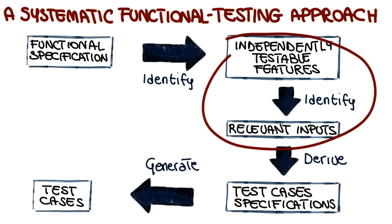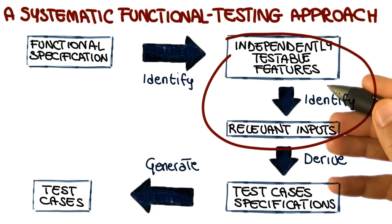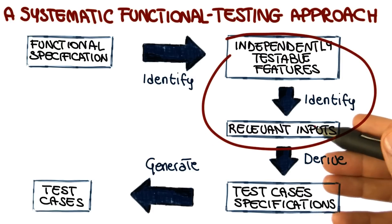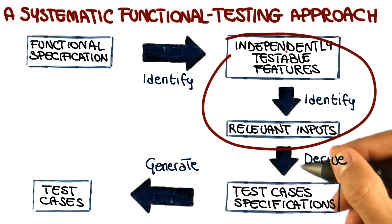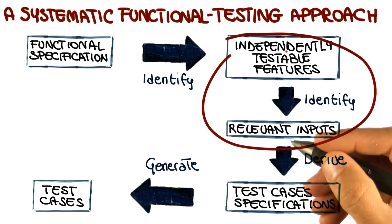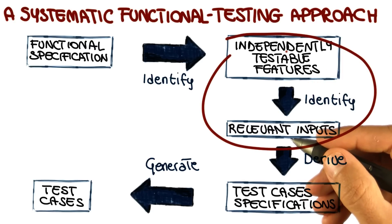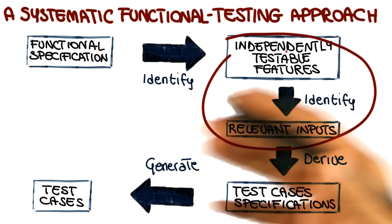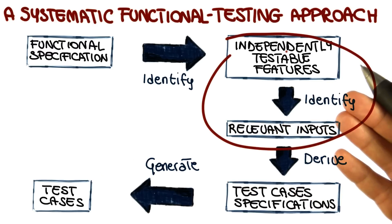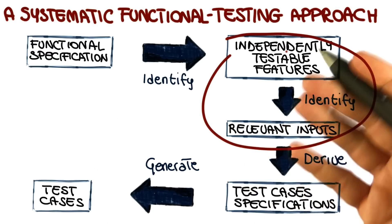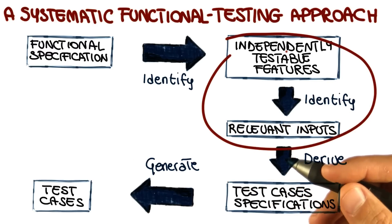Once we have identified independently testable features, the next step is to identify the relevant inputs for each one of these features. And there are many ways to do that. Instead of looking at them all, we're going to focus on two different ways of doing it — fairly general ways that are applicable to a number of situations.